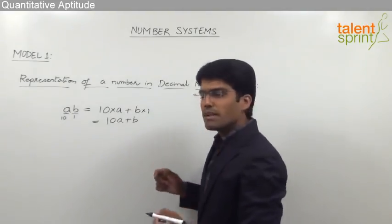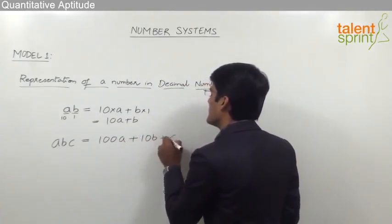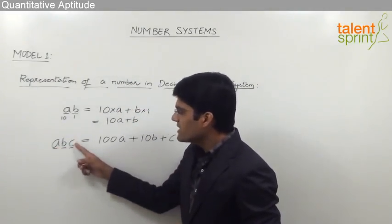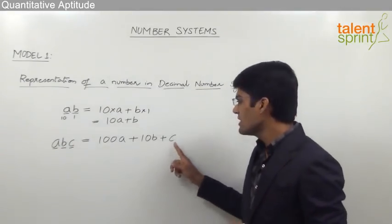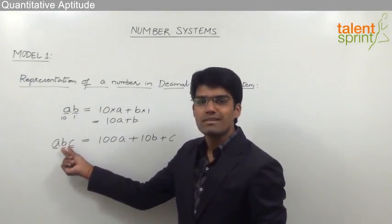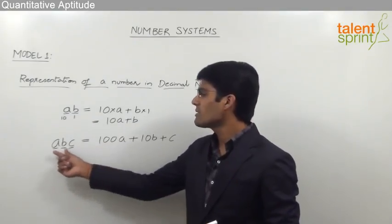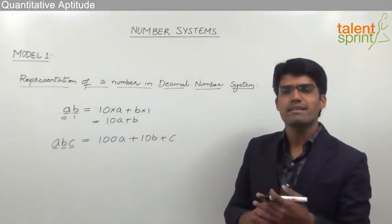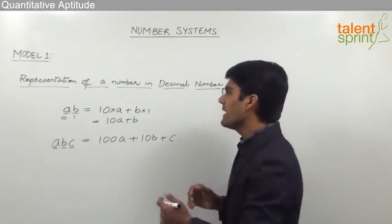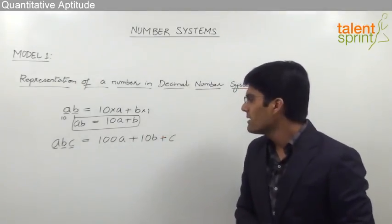Similarly, a three-digit number ABC is taken as 100A plus 10B plus C, because C is in the units place (multiplied by 1), B is in the tens place (multiplied by 10), and A is in the hundreds place (multiplied by 100). Likewise, a four-digit number can be taken as 1000A plus 100B plus 10C plus D, and so on. Remember: a two-digit number AB equals 10A plus B, and a three-digit number ABC equals 100A plus 10B plus C.